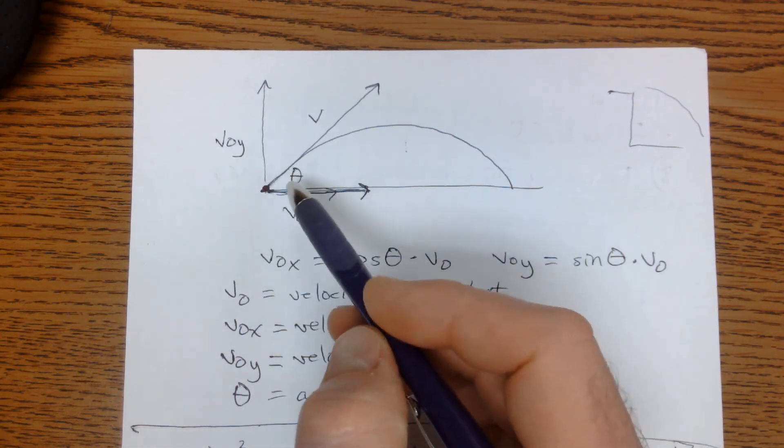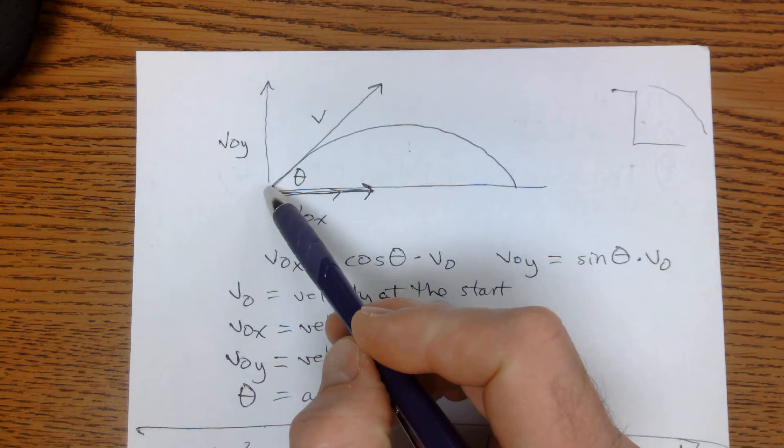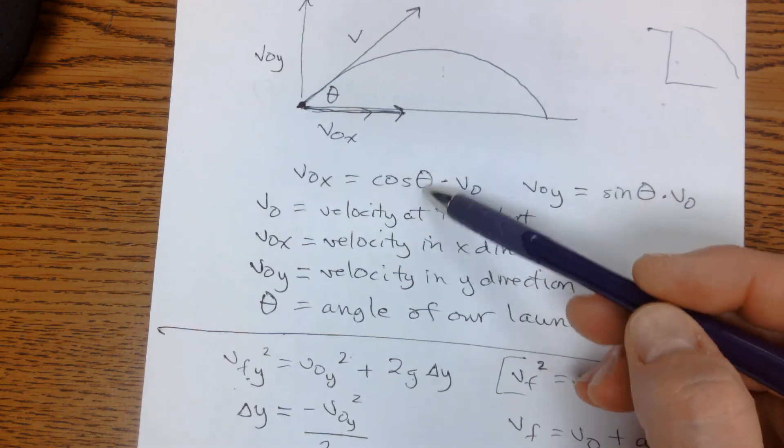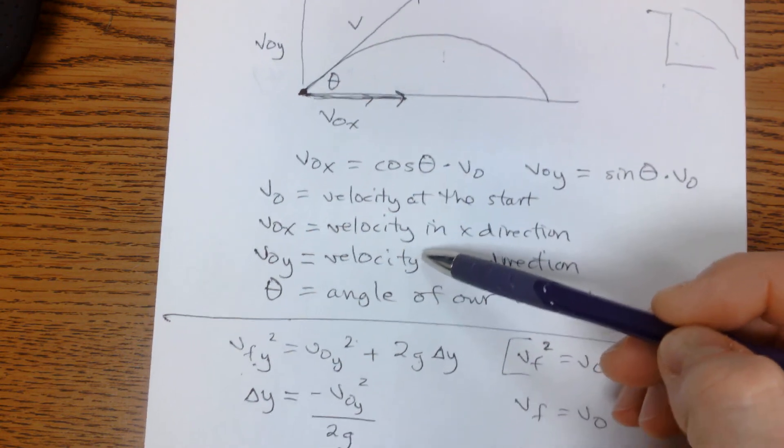All right, so we've been working through this projectile problem, like an object shot out of a cannon, making its parabolic arc, and we've listed out all the various types of components that we have.